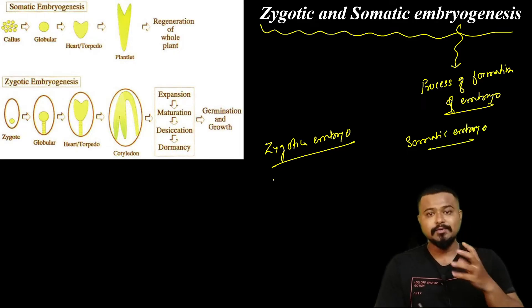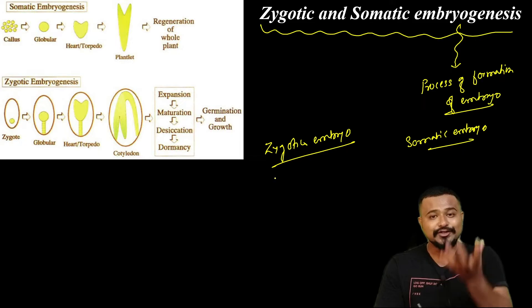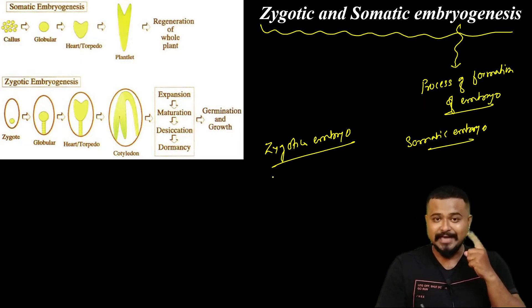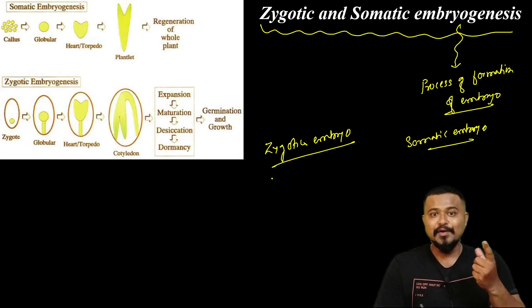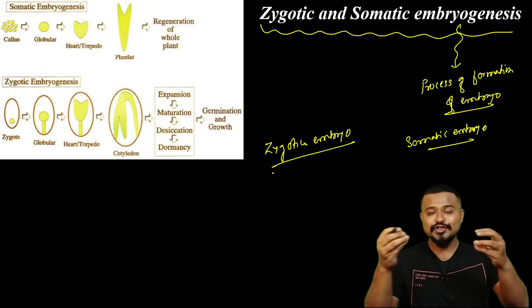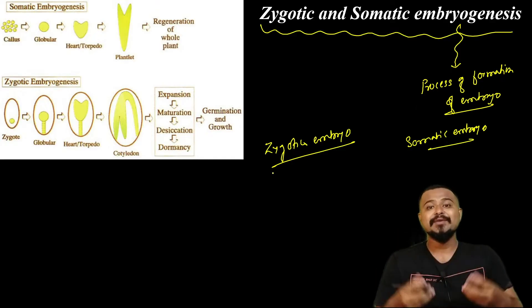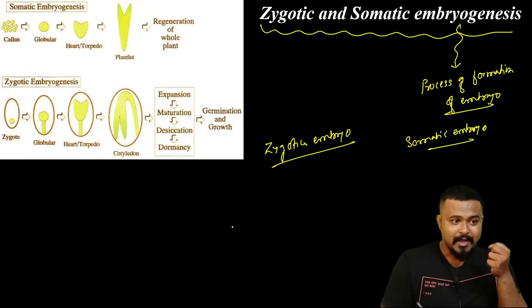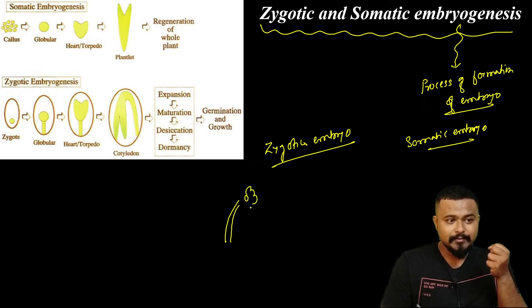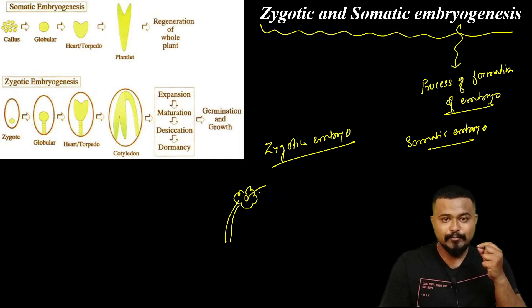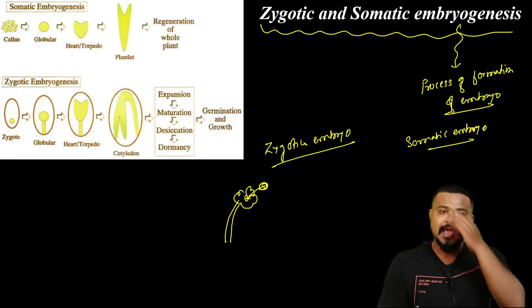What is zygotic embryogenesis? Zygotic embryogenesis is the fusion of male and female gametes. This is the natural reproductive process involving the male reproductive organ.